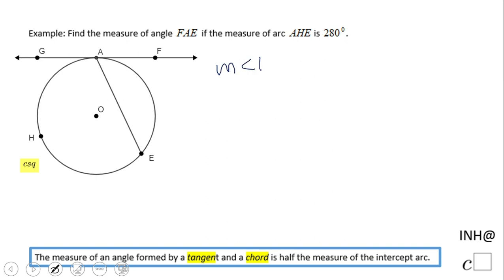In our case, the measure of angle FAE is half the measure of arc AE. That's what this is down here. The question is, how can we find this arc AE?